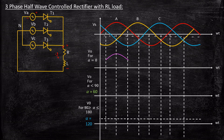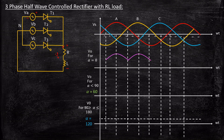Each thyristor conducts for 120 degrees, so from 30 degrees adding 120 gives 150 degrees — T1 conducts till that point. At 150 degrees we trigger thyristor T2. VB is more positive than VA and VC, so T2 is forward biased and acts as short circuit, and Vout equals VB, following phase B. Then at 270 degrees T3 is triggered, T3 acts as short circuit, and Vout equals VC, following phase C exactly. The sequence repeats in this fashion.